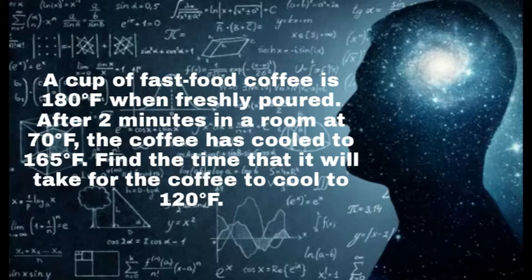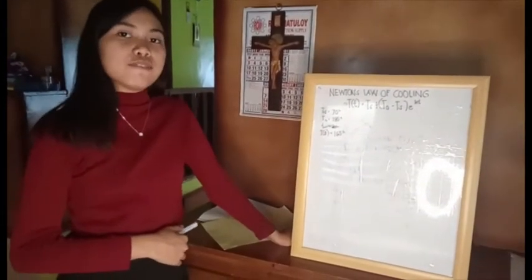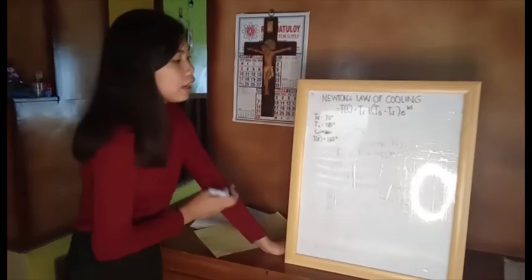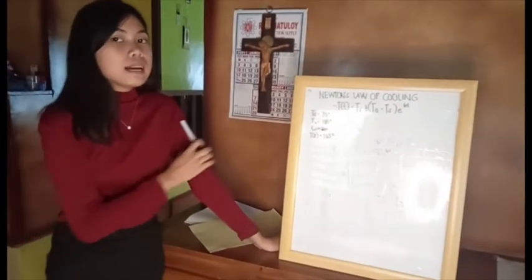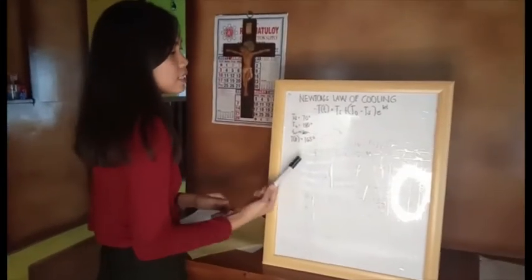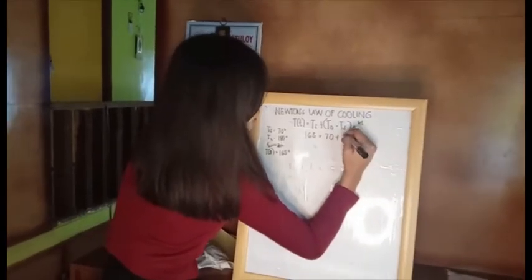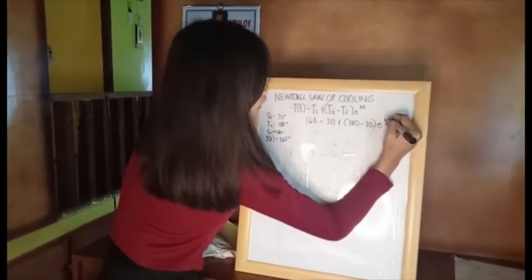A cup of fast food coffee is 180 degrees Fahrenheit when freshly poured. After 2 minutes in a room at 70 degrees Fahrenheit, the coffee has cooled to 165 degrees Fahrenheit. Find the time it will take for the coffee to cool to 120 degrees Fahrenheit. Our surrounding temperature is 70 degrees, initial temperature is 180 degrees, T(2) equals 165 degrees, and time is 2 minutes.